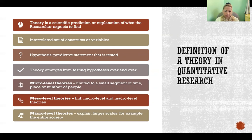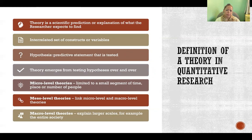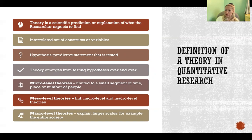Micro-level theories apply to a very specific place, small group of people, or only during a certain segment of time. Macro-level theories are broader in scale and apply to a larger population. A meso-level theory links and forms a bridge between micro and macro level theories, offering a logical connection or explanation for how the micro-level theory fits within the broader macro-level theory.